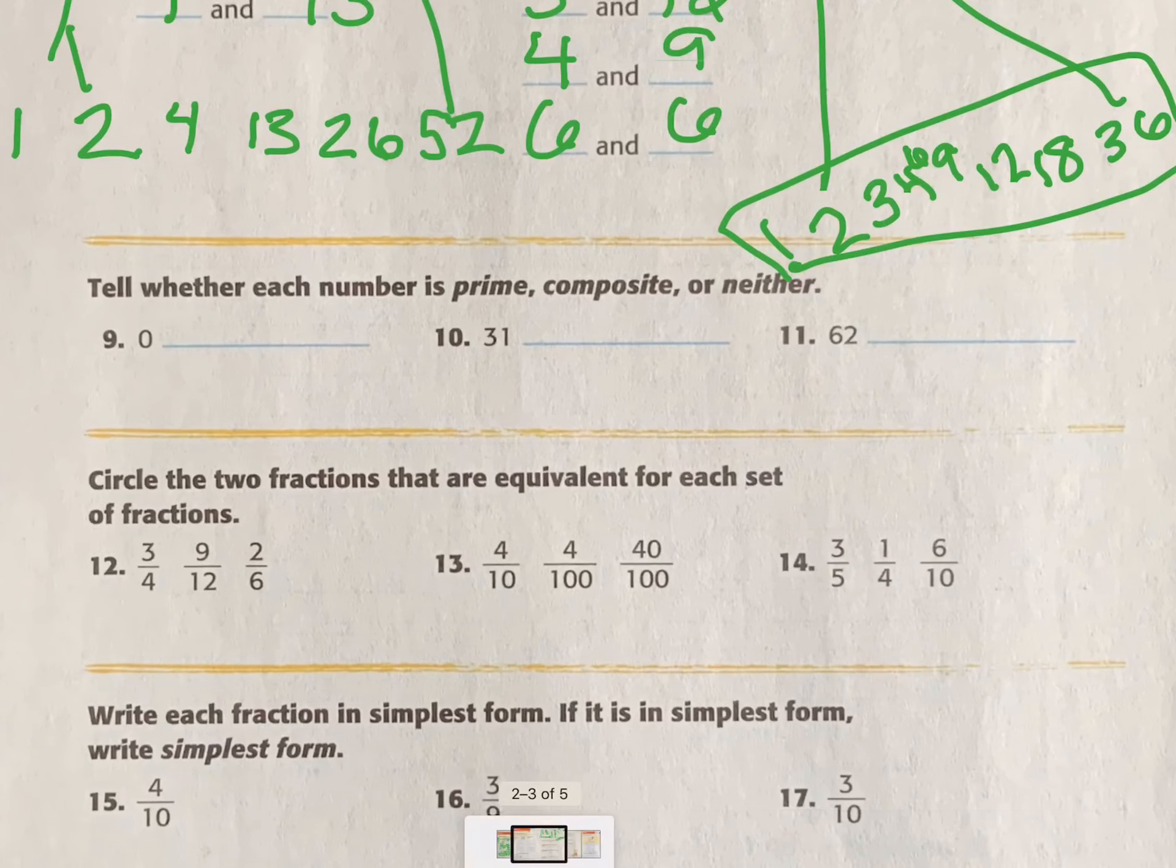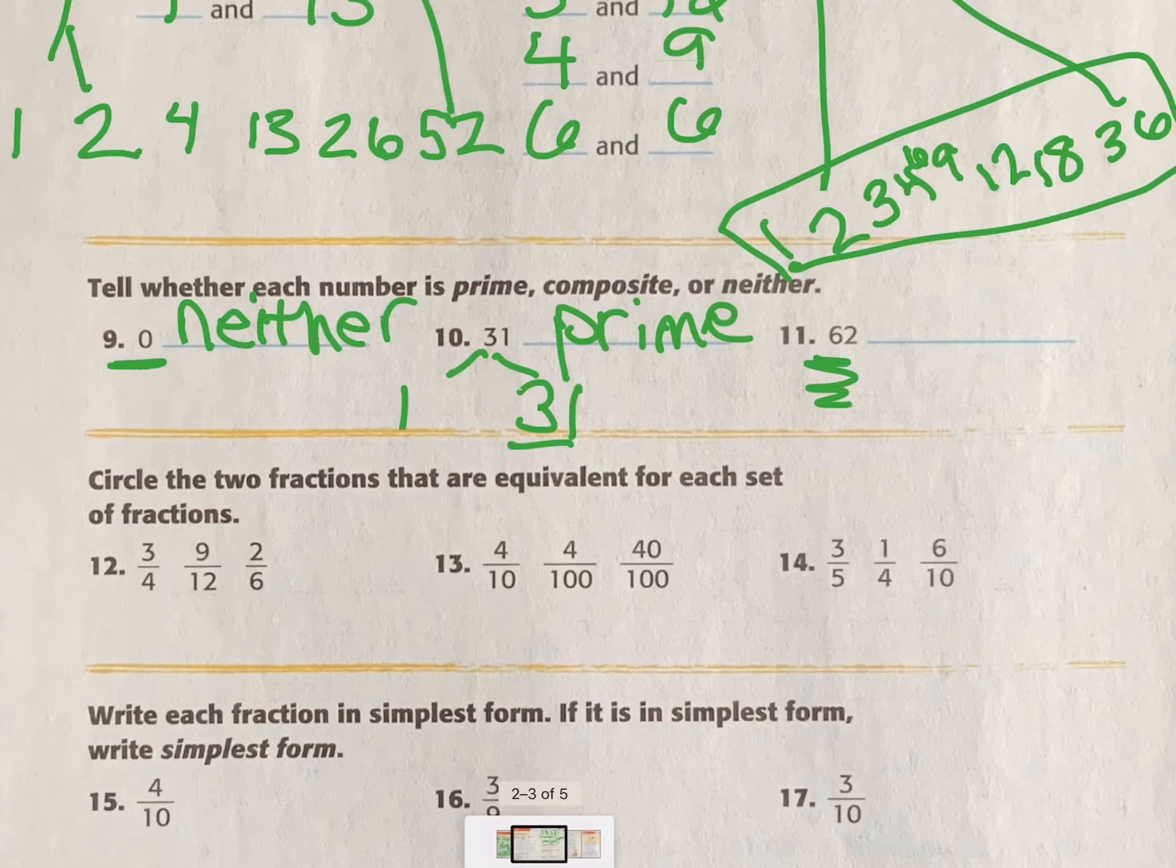Moving right along. Tell whether each number is prime, composite, or neither. Zero. Does it have any factors? No. So it is neither. 31 can only be divided by 1 and itself, 31. So it is prime. 62 is even. So it is definitely composite.